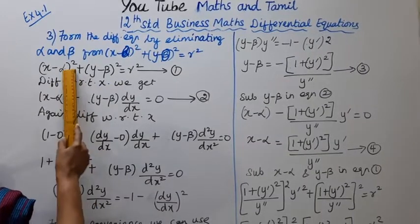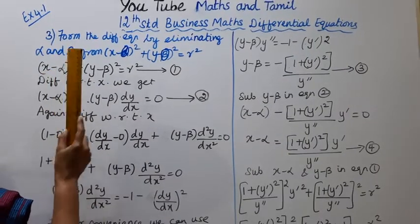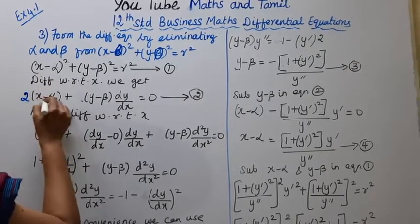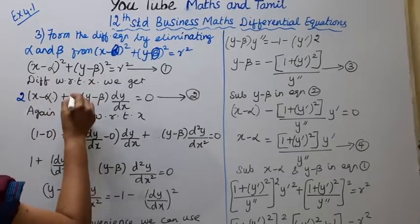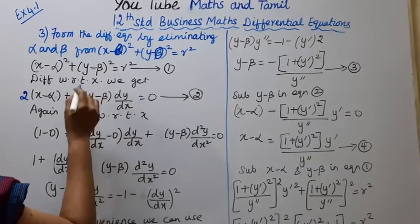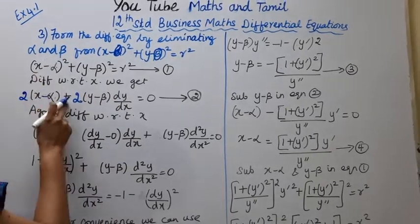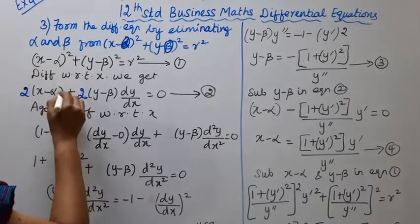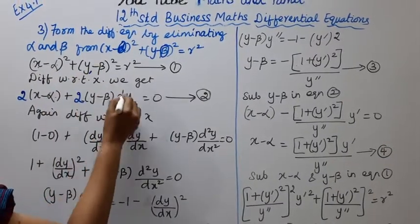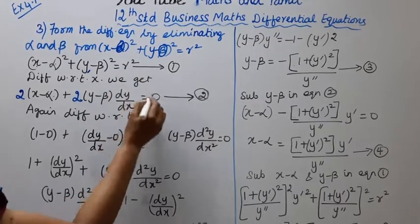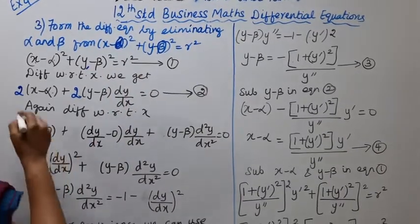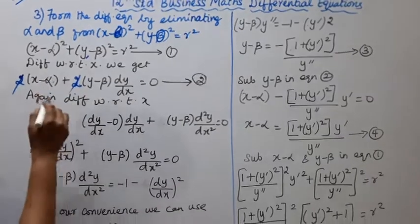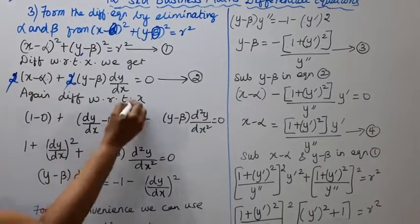Differentiating with respect to x: 2(x − alpha)·1 + 2(y − beta)·(dy/dx) = 0. This gives us 2(x − alpha) + 2(y − beta)·(dy/dx) = 0.